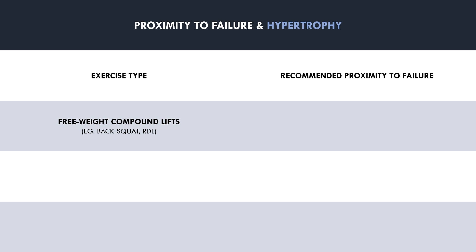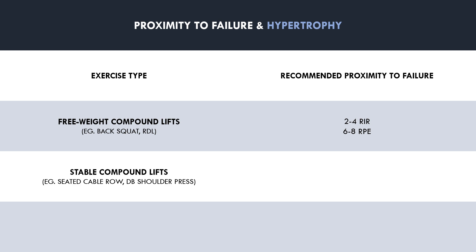Heavy compound lifts with high stability demands should generally be trained slightly further from failure because they are highly fatiguing and typically involve heavier loads — examples include back squats and stiff leg deadlifts. An appropriate proximity to failure for these exercises is around 2-4 reps in reserve, or RPE 6-8. Compound lifts that aren't as centrally fatiguing and don't have high stability demands — such as the seated cable row and dumbbell shoulder press — can generally be taken slightly closer to failure, around 1-3 reps in reserve, or RPE 7-9.